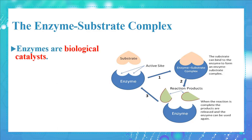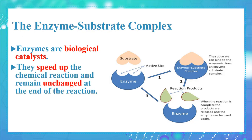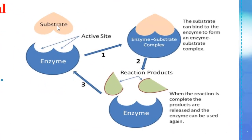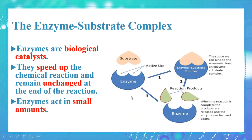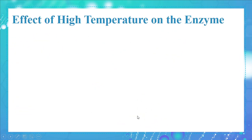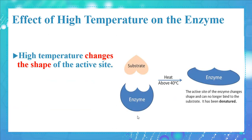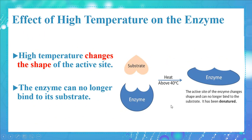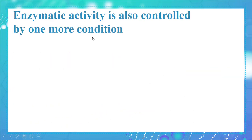Enzymes are biological catalysts — they speed up chemical reactions and remain unchanged at the end of the reaction. The enzyme binds to its substrate at the active site, breaks the substrate into products, releases the products, and is then ready to bind to another substrate. That's why enzymes can act in small amounts. High temperature changes the shape of the active site; when temperature exceeds 40°C, the active site shape changes and the enzyme can no longer bind to its substrate.